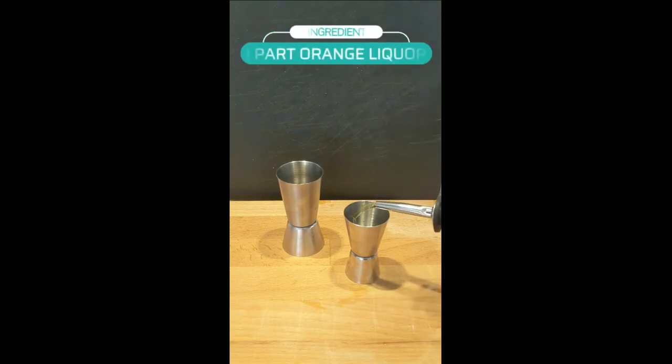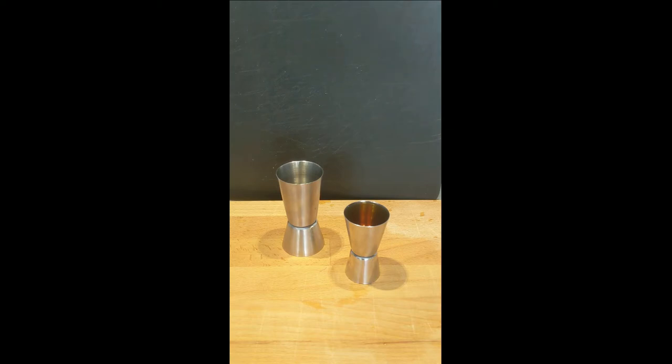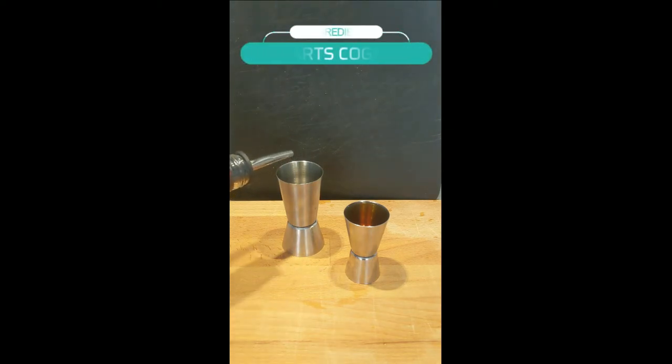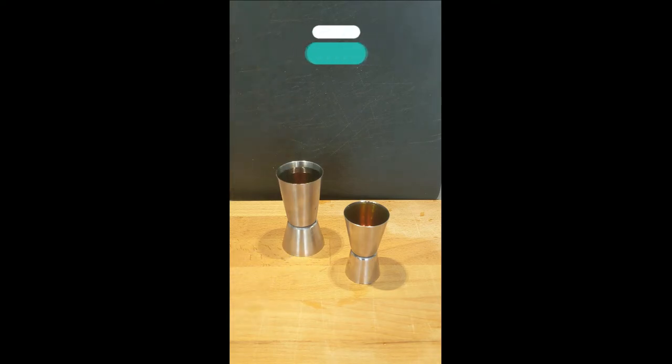And now for the alcohols. Start off by pouring out one part orange liqueur. Triple Sec, Cointreau, and Grand Marnier are all fine. And then pour out two parts cognac, or as a substitute, just any kind of brandy. And then set them aside.